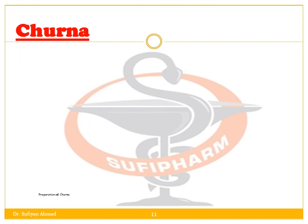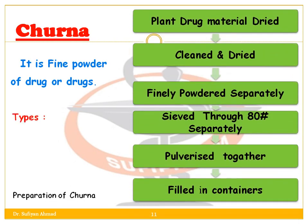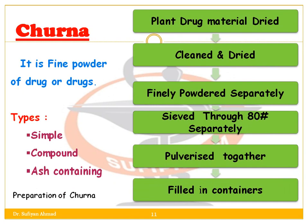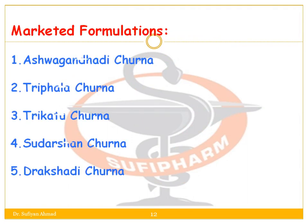Next is Churna — it is the fine powder of a drug or drugs. There are different types: simple, compound, and ash-containing. In preparation of churna, the plant drug material is dried, cleaned, and finally powdered separately, then passed through an 18-number sieve separately, mixed together, and filled in containers. Marketed examples include Ashwagandha churna, Triphala churna, Trikatu churna, and Sudarshan churna.